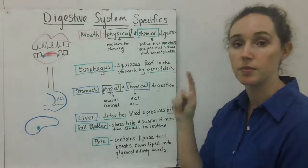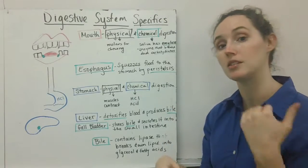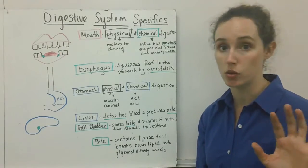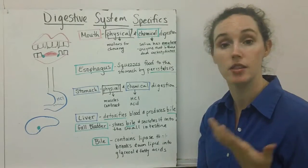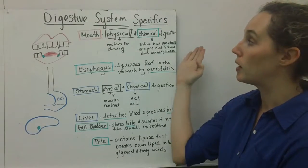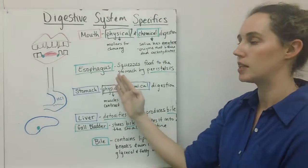Saliva isn't just water. It's actually water and an enzyme called amylase (a-m-y-l-a-s-e), and amylase is a carbohydrase, which means it's an enzyme that breaks down carbohydrates. Anytime you see a-s-e in a word, it's usually a good indication that it's an enzyme.